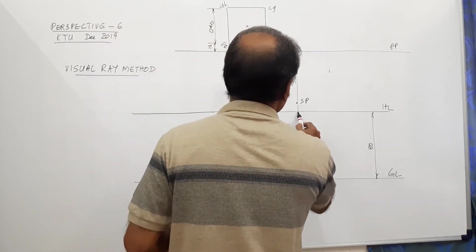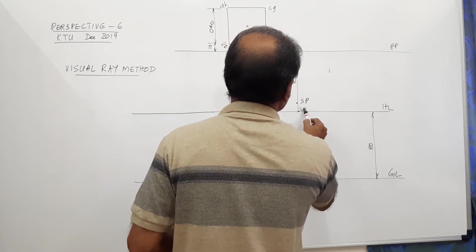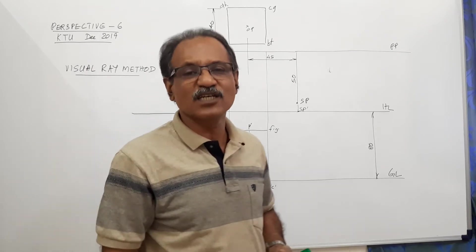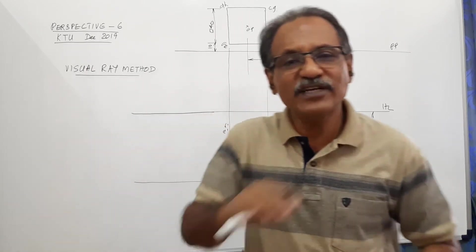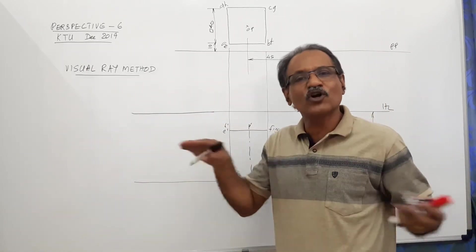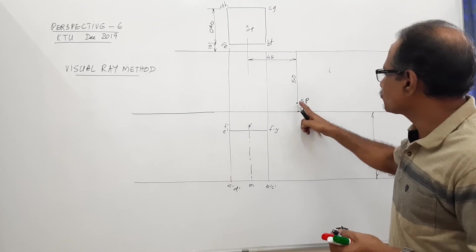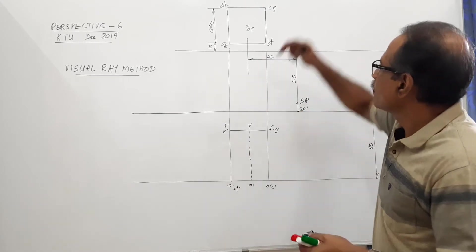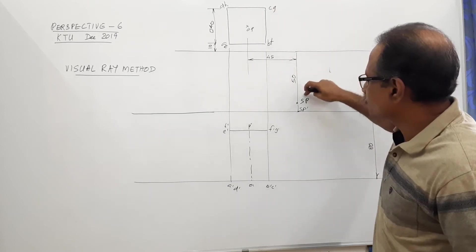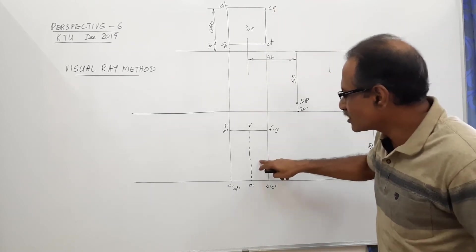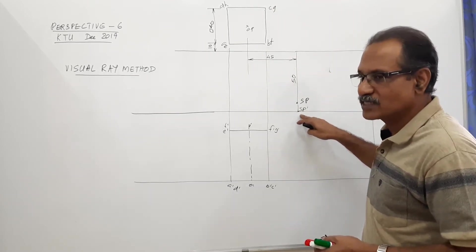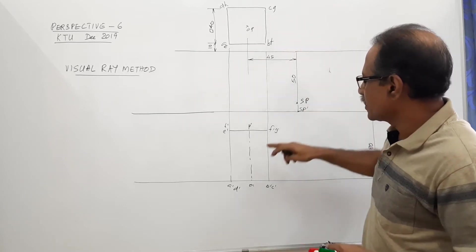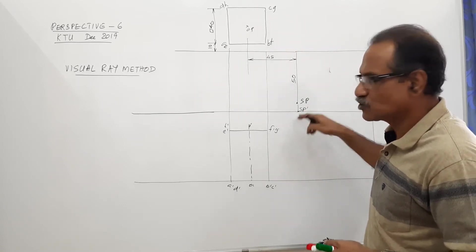Now locate the elevation of SP. If this is SP in plan, then SP dash is the elevation of the station point. The elevation of the station point should fall on HL, so draw SP down to HL to get SP dash. So what we have drawn: plan of object, plan of SP, elevation of object, and elevation of SP.